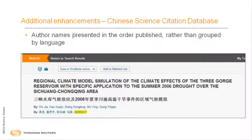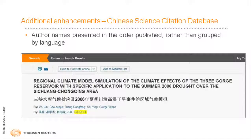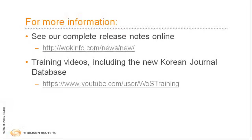The Chinese Science Citation Database has been improved to display author names in the order published, rather than grouped by language. This does not affect how names are searched. For more details on these enhancements, please see our full release notes.